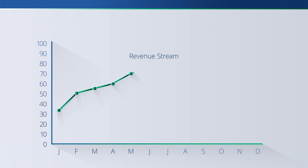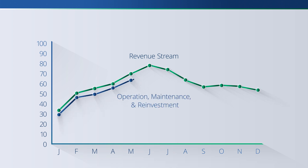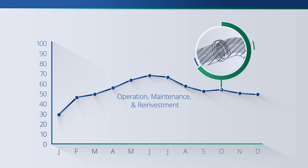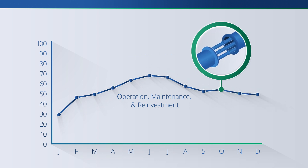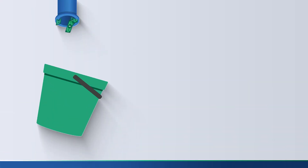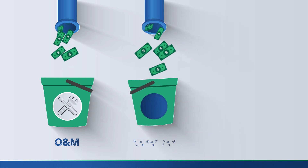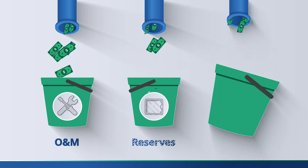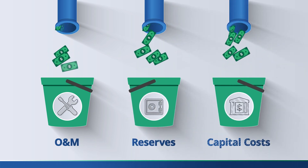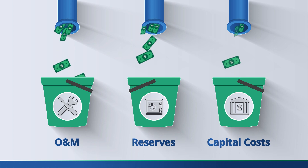The goal of full cost pricing is a revenue stream that adequately covers ongoing operation and maintenance requirements and provides capital for reinvestment in the system, including for debt service. So let's look at all the areas you need to consider to get the full cost price. The main funding buckets a system needs are operation and maintenance, or O&M, reserves, and capital costs.